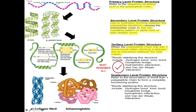Quaternary level protein structure refers to the association of more than one polypeptide chain. For example, hemoglobin is made up of four different polypeptide chains — two beta chains and two alpha chains. Another example is collagen fibril, made up from the association of three polypeptide chains. The bonds stabilizing this structure include hydrogen bond, ionic bond, disulfide bridge, hydrophobic interaction, and van der Waals interaction — all of which are important to remember.